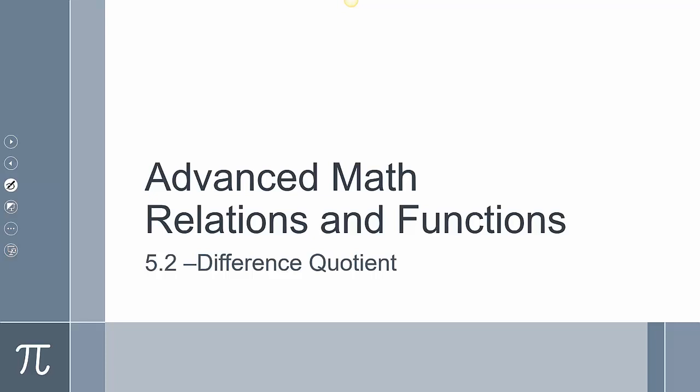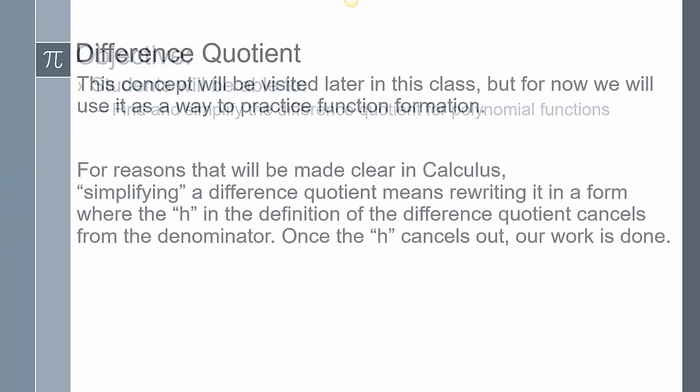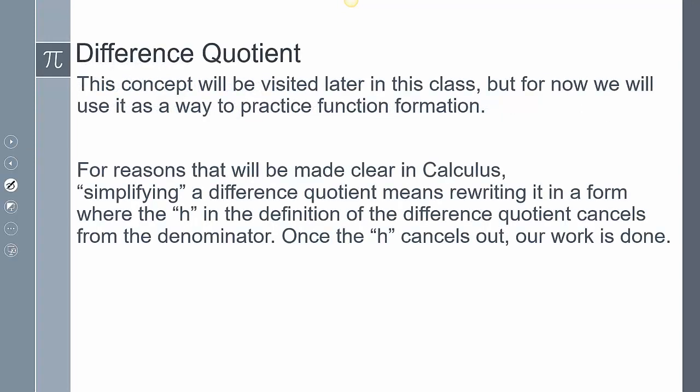This is section 5-2, we're going to be talking about the difference quotient. Today we're going to find and simplify the difference quotient for polynomial functions. This concept will be visited again later in this class, but for now we will use it as a way to practice function notation. Simplifying a difference quotient means rewriting it in a form where h in the definition cancels out from the denominator. Once the h cancels out, your work is done.